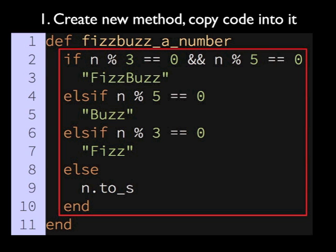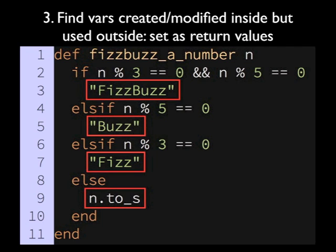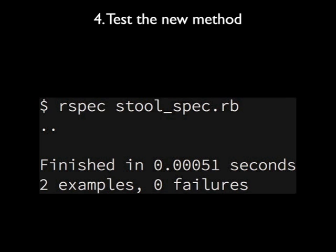So let's go through it. First, we copy the relevant bit of code into a new method with an intention-revealing name. Good variable and method names go a long way toward making code self-commenting. Next, we look for variables created outside our new method but used inside it. We have only one: n. We can get it into the method by adding it as an argument. We then look for any variables modified or created inside this method but used outside it. In this case, the only one is the implicit return value, and that takes care of itself. Now we can run our dream test, and it passes right away. Naturally, the original test still passes because we haven't touched FizzBuzz yet.